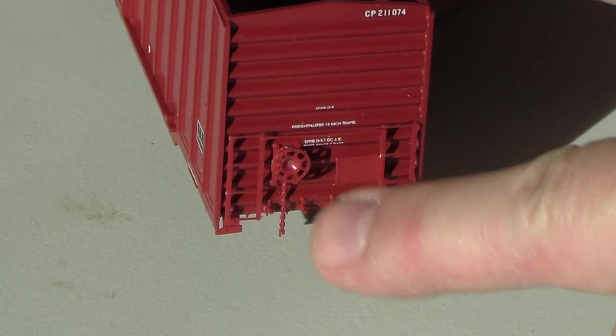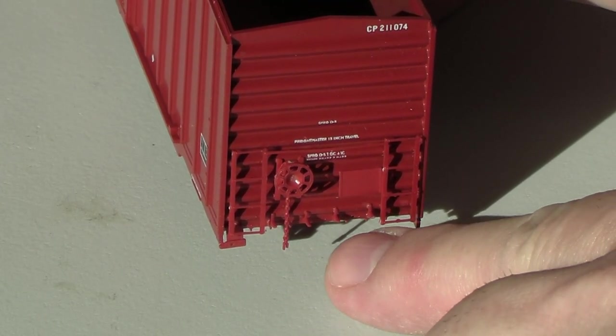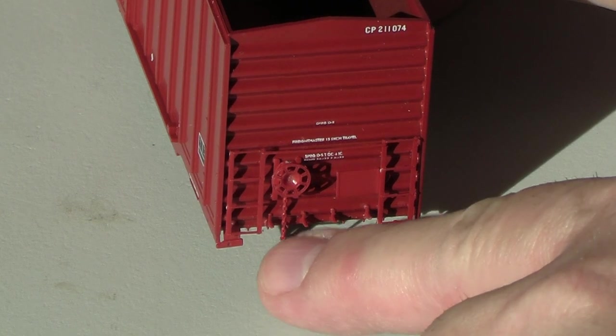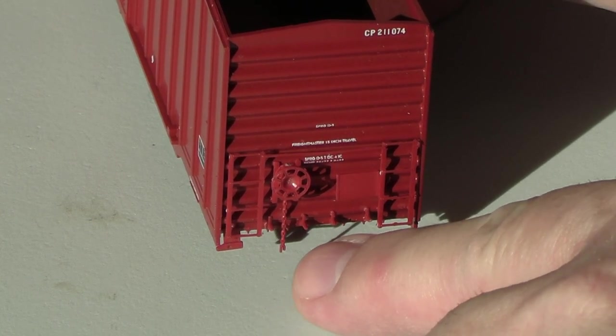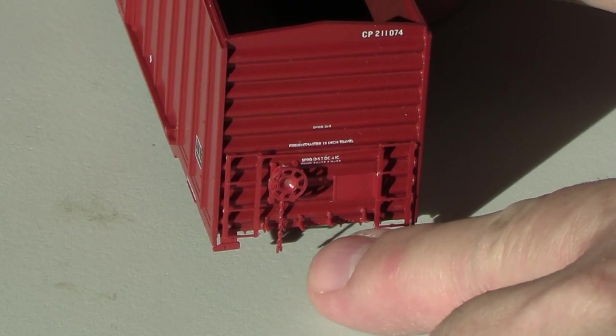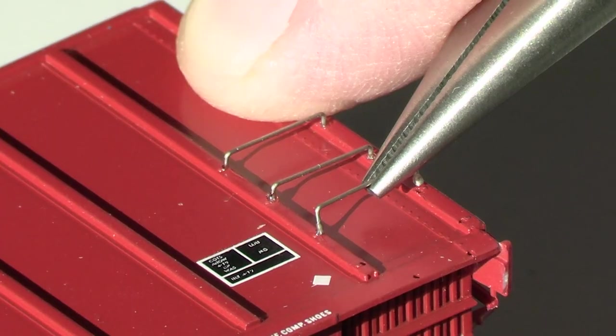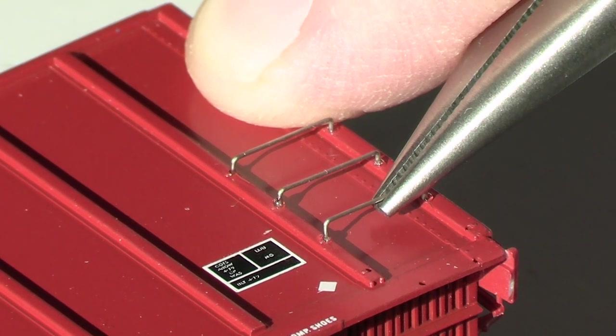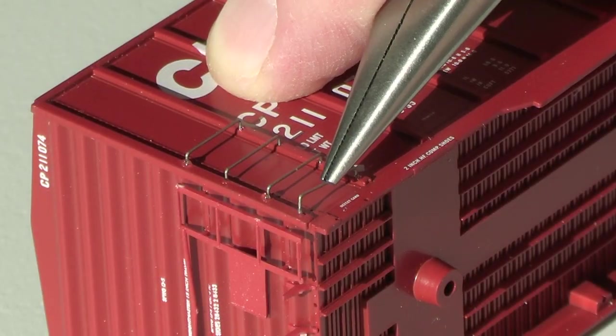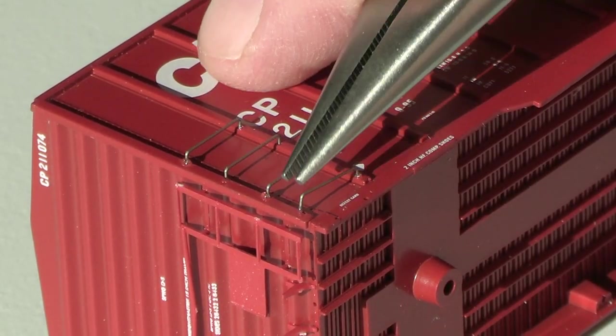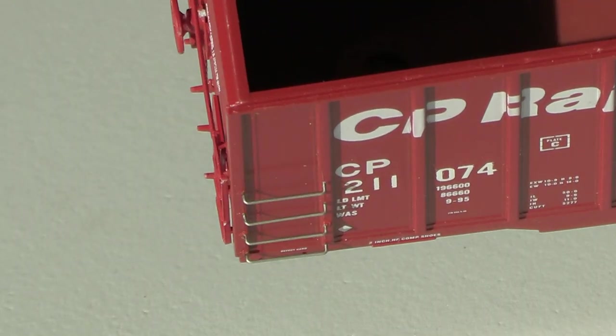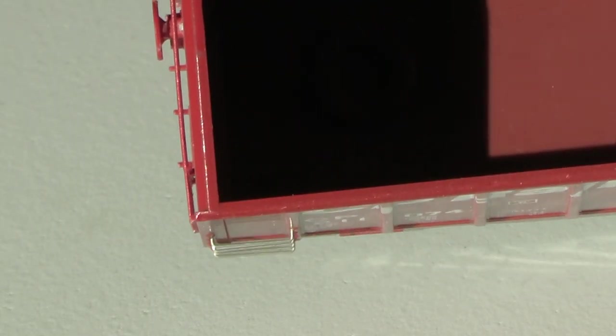I finished gluing on the end details. The only thing I did that's different than the instructions is I left off the crossover platforms, because when I get home I have some photo etched ones that I'd rather use. The instructions suggest putting a small amount of CA glue on the ends of the wire grab irons before trying to insert them in the car. I found that they fit without pre-drilling, which is really nice. Now I have all the grab irons glued on. As you can see, they do stick out a little bit. That's normal.